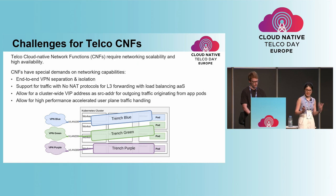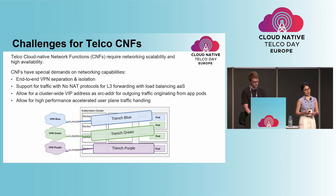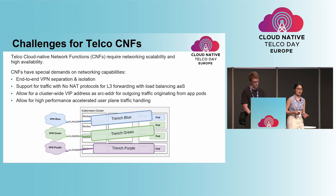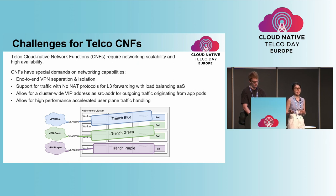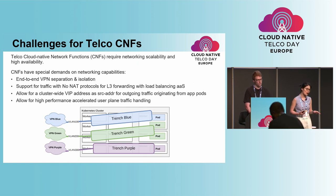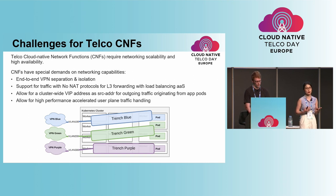Hence, secondary networking solutions have been developed to get around some of the limitations of Kubernetes primary networking. However, the problem is that there is no standardized way for cluster-wide connectivity management. Those solutions tend to be highly application-specific. They are not technically interchangeable, non-reusable, and not intended to facilitate cross-platform portability.